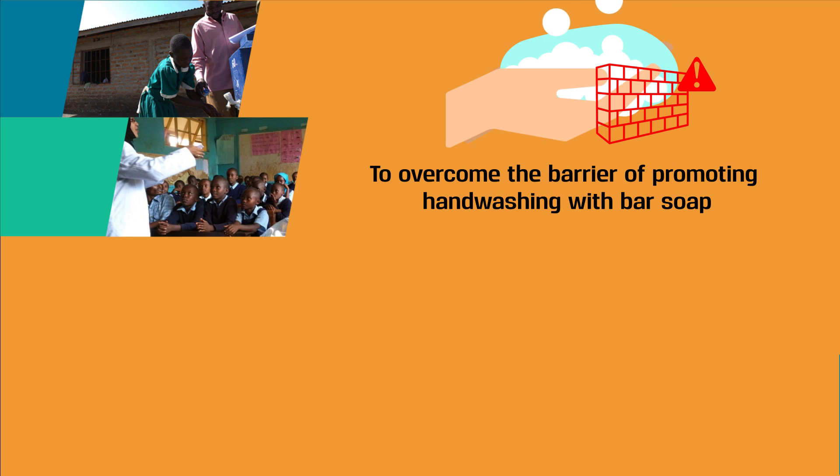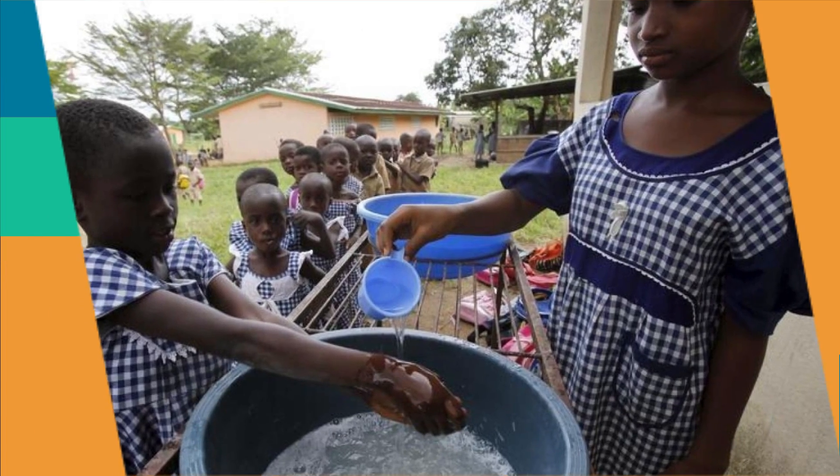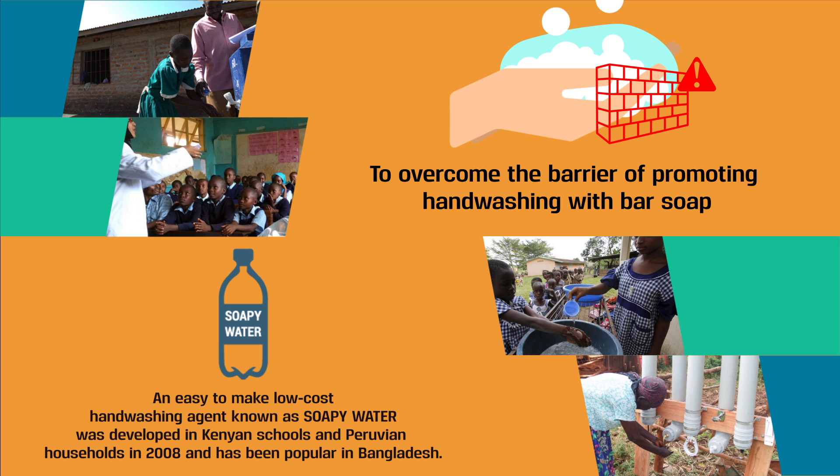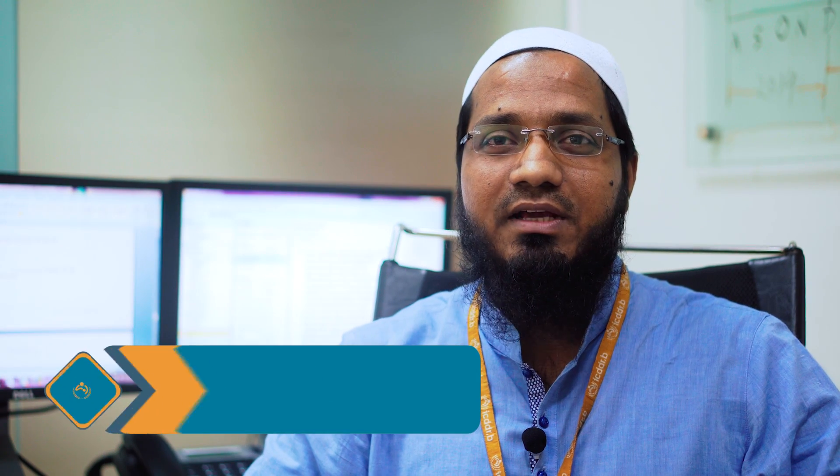To overcome the barrier of promoting hand washing with bar soap, an easy-to-make, low-cost hand washing agent known as soapy water was developed in Kenyan schools and Peruvian households in 2008 and has been popular in Bangladesh. The biggest advantage of soapy water is that it can be shared and used at shared water points. Unlike bar soap, it can be kept in a shared hand washing station, which ultimately increases hand washing frequency in low-income communities. The cost to prepare a soapy water bottle is only 5 cents, compared to bar soap which is about 36 cents in Bangladesh.